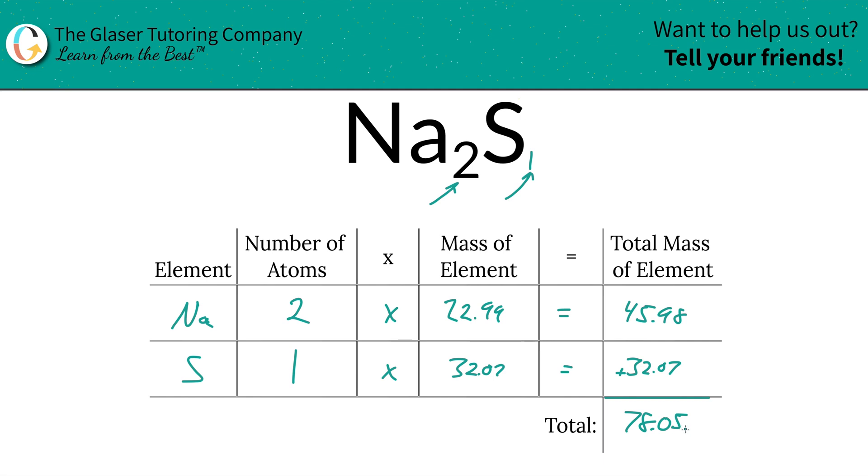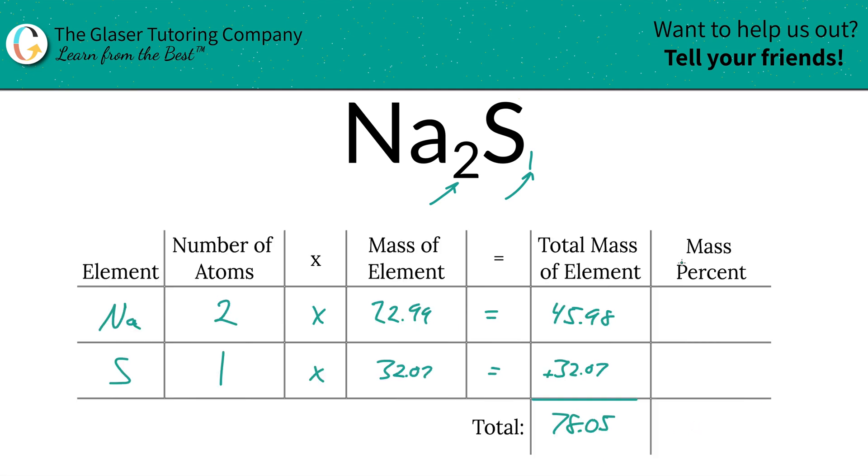Now that we have that in hand I'm going to add a column to find those percents. So to find the mass percent of sodium we're simply going to take the total amount of sodium here, so 45.98 units of mass, and then divide it by the total mass of the entire compound 78.05. The table gives us nice structure and this is simply going to be for sodium 58.91 percent.